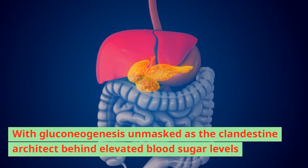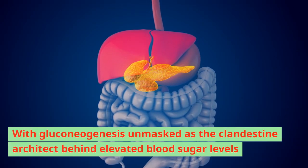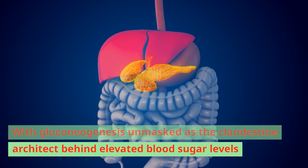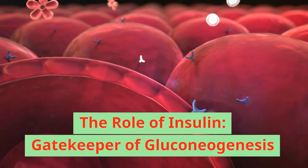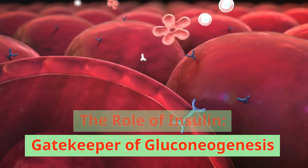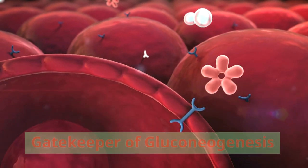With gluconeogenesis unmasked as the clandestine architect behind elevated blood sugar levels, attention naturally turns to the role of insulin, the sentinel of metabolic harmony. The role of insulin: gatekeeper of gluconeogenesis.